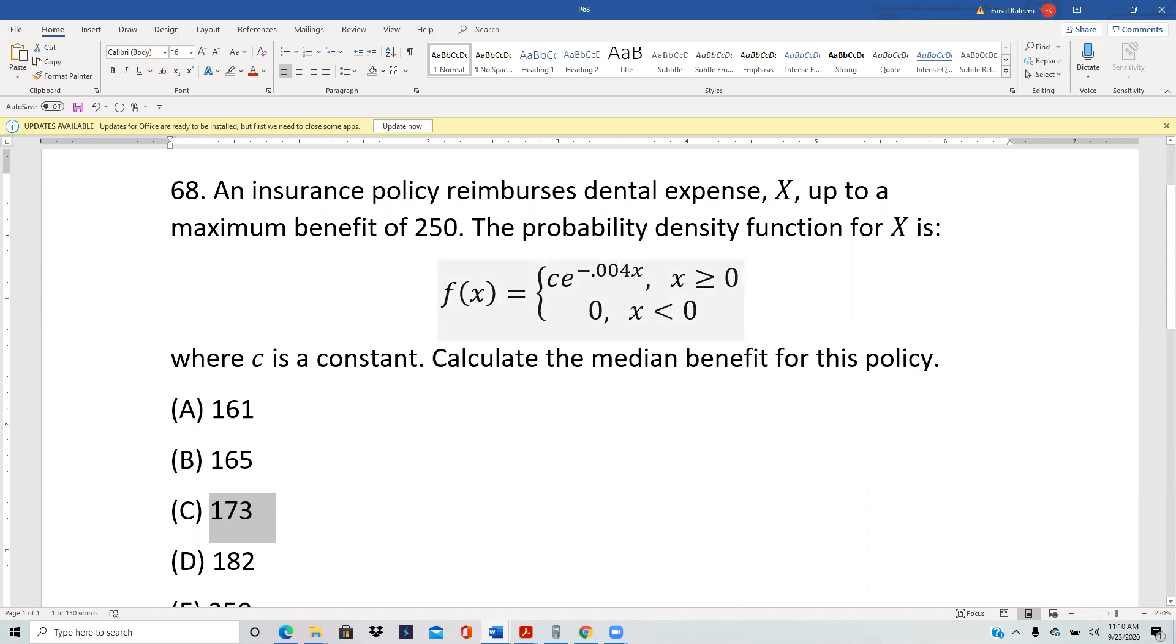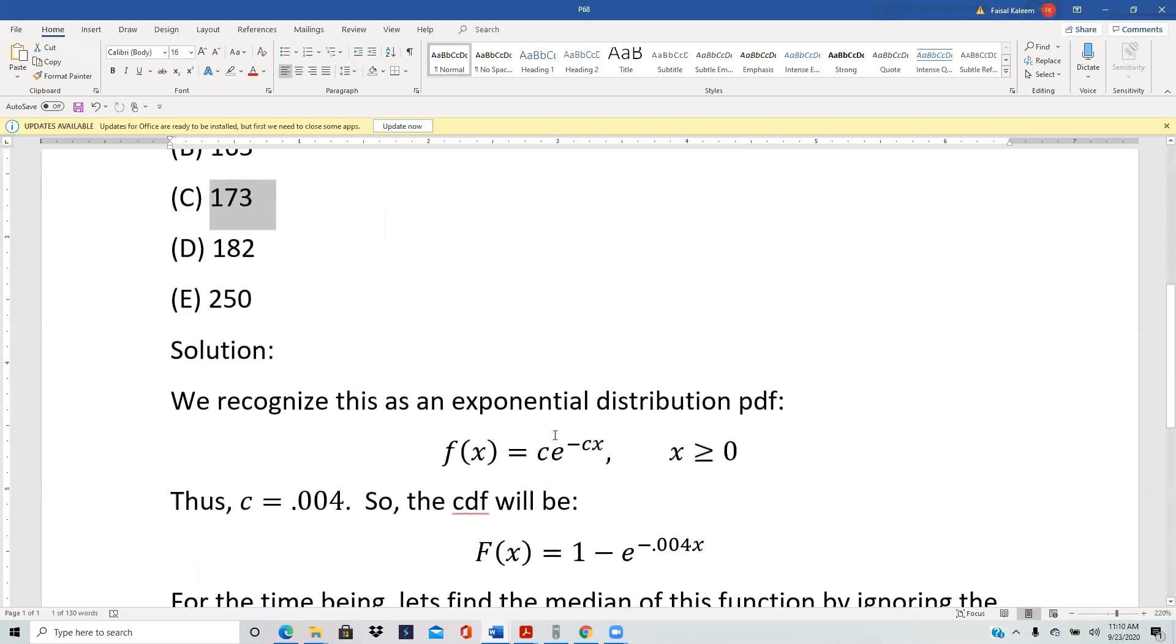Now we recognize this as an exponential distribution. We generally write it as 1 over k e to the negative x over k, and writing it as c e to the negative cx is fine as well. The reason why we write it as 1 over k negative x over k is when we know what the mean is, and the mean is the k in that format. But here no one cares what the mean is, so this is fine.